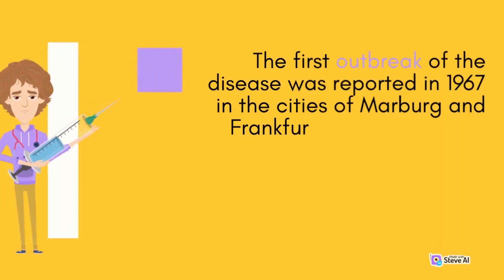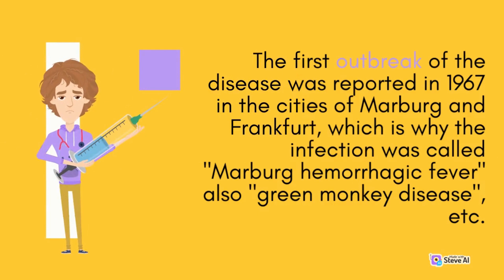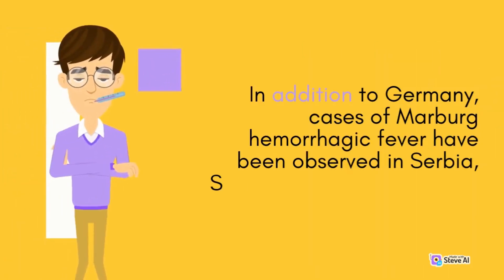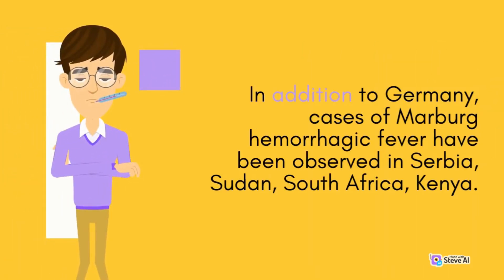The first outbreak of the disease was reported in 1967 in the cities of Marburg and Frankfurt, which is why the infection was called Marburg Hemorrhagic Fever, also known as green monkey disease. In addition to Germany, cases have been observed in Serbia, Sudan, South Africa, and Kenya.